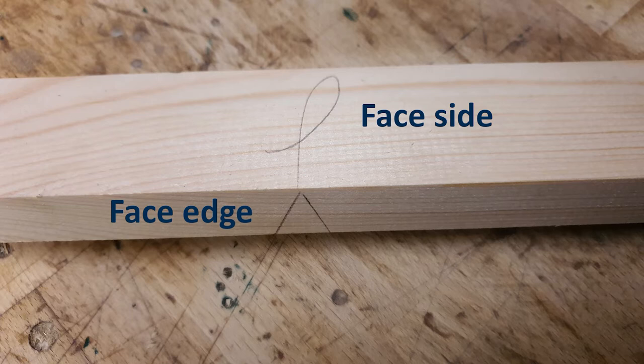These are the face side and face edge marks. When we square around a workpiece or gauge lines we must always keep the stock of the square or gauge on one of these faces. The stock must never go on either of the other two sides.